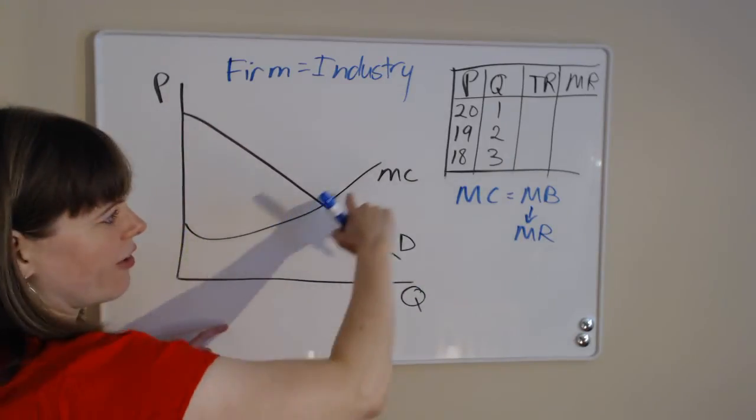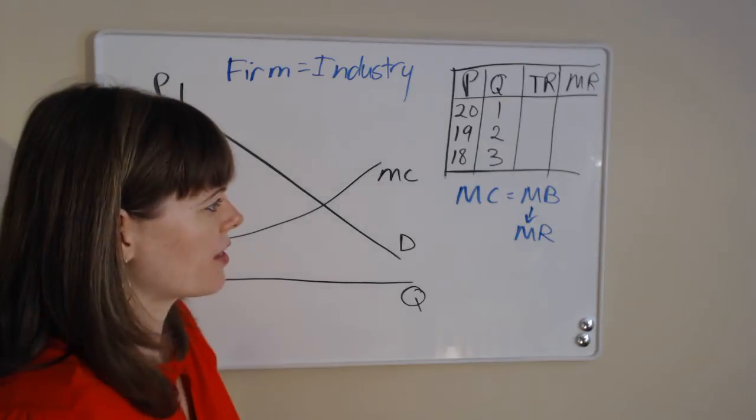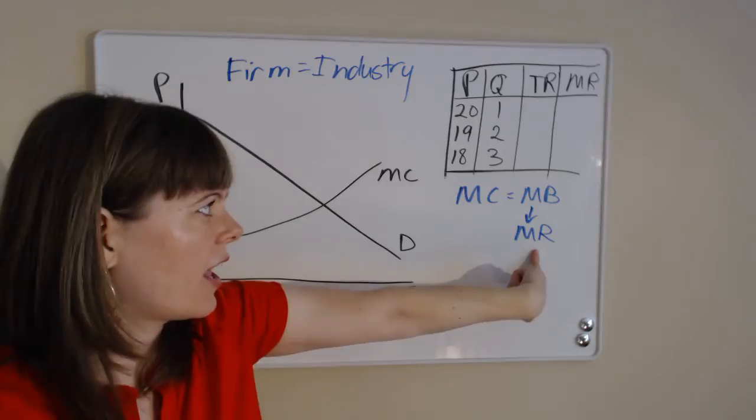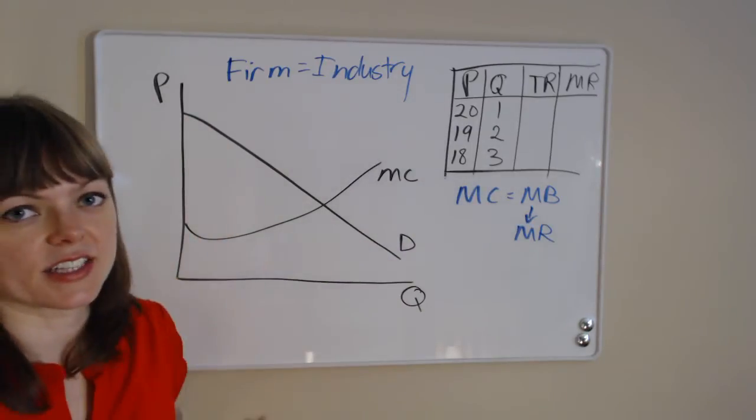So we can find our marginal cost pretty easily. We've already mapped that on the graph. That's something that's given to you to begin with. But we're going to have to calculate our marginal revenue curve.